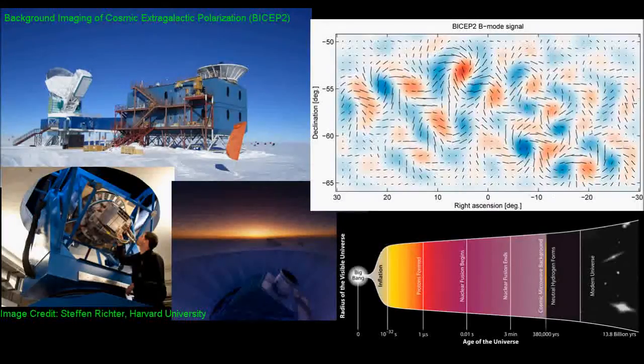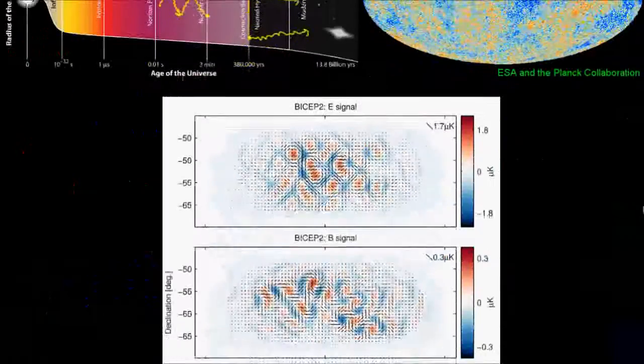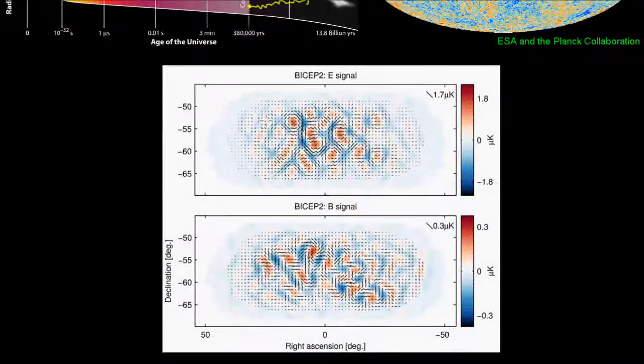So on the maps that they made of the polarization, in each direction of the sky, you draw a little line segment. And that line segment corresponds to the polarization of that part of the CMB.